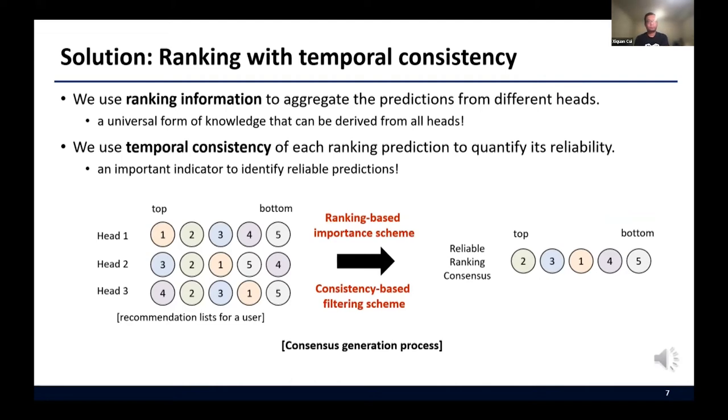We also utilize the temporal consistency of each ranking prediction, which is an important indicator to identify reliable predictions according to our analysis. So basically, the proposed strategy penalizes the frequently changed predictions and pushes the items having not only high ranking, but also high consistency across the heads to the top of the consensus. By doing so, we can generate reliable ranking consensus from all heads.